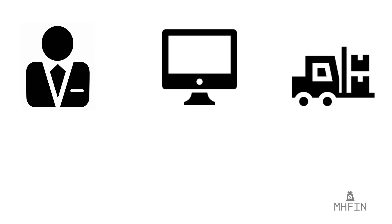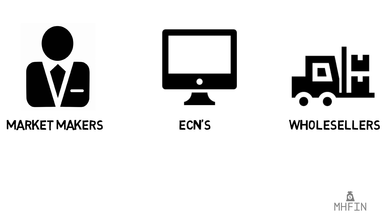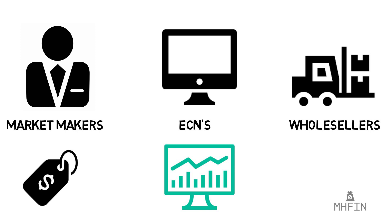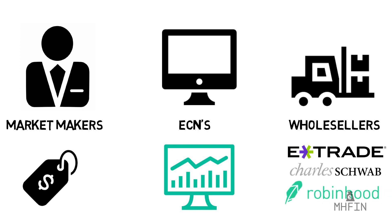We have three types of players: market makers, electronic communication networks, and wholesalers — otherwise known as order flow firms. Market makers are the players who provide liquidity in the marketplace, meaning they are required to buy when nobody else is buying and sell when nobody else is selling. They make the market. ECNs are computerized order placement systems, and it's important to note that anyone can trade through ECNs — not just big banks and investment firms. And finally, you have the wholesalers. Many online brokers that cater to retail investors will sell their order flows to wholesalers, and these order flow firms then execute orders on behalf of the online brokers.